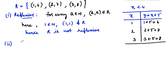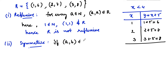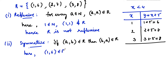Now let us check for symmetric. The condition for symmetric is: if (a, b) belongs to R for a and b in natural numbers, then (b, a) must also belong to R. Here, (1, 6) belongs to the relation R, but (6, 1) does not belong to R. Hence we can say R is not symmetric.